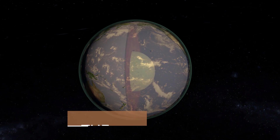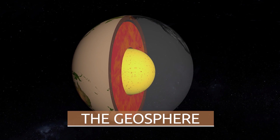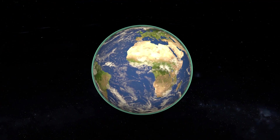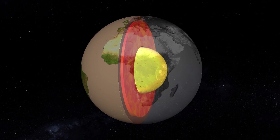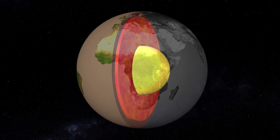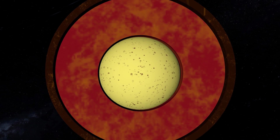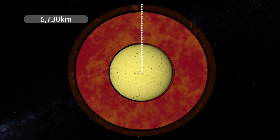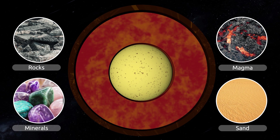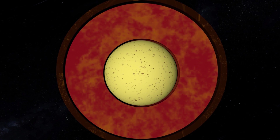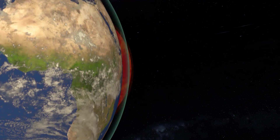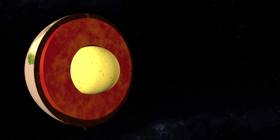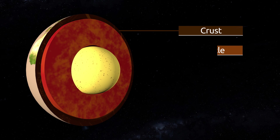Today we're going to learn about the geosphere. The geosphere is an inner layer of the Earth, extending from its surface to the inner core of the planet. This layer is made up of solid rock and habitable ground, with a thickness of approximately 6,730 kilometers. It is made up of rocks, minerals, magma, and sand. The closer we get to the inner core, the more temperature, density, and pressure increase. The geosphere is made up of three concentric layers: the crust, the mantle, and the core.